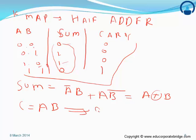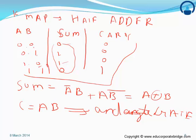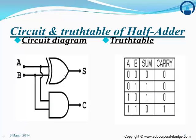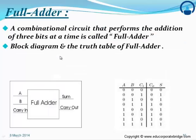The carry output A·B represents an AND gate. Hence, as a circuit for the half adder: the sum is implemented using an XOR gate, and the carry is implemented using an AND gate. We can now move on to the full adder.